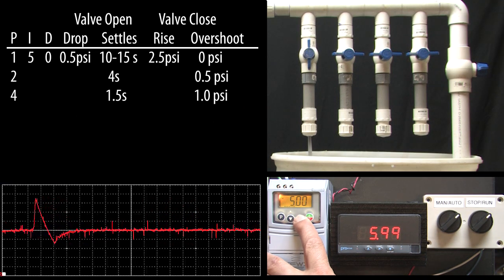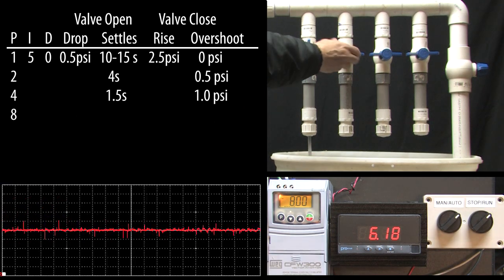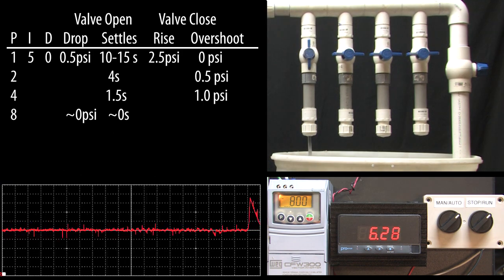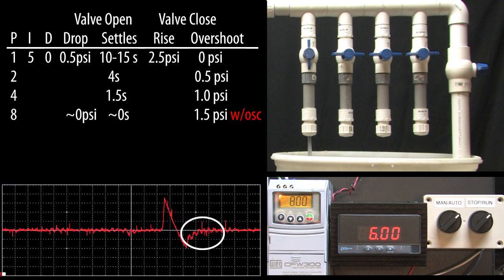We'll assume we do care so let's keep going and double P again to see what happens. I'll open the valve and wow! The system recovered so fast the pressure drop is almost non-existent. But, the abrupt valve closing is now causing a 1.5 psi overshoot and worse, we're starting to see some oscillations showing up in the recovery. When you start to see oscillations like this, you know you're pushing things too hard and it's time to back off to the previous setting.